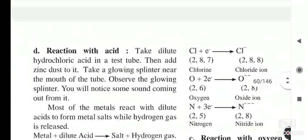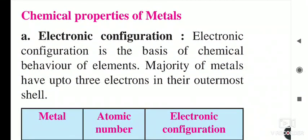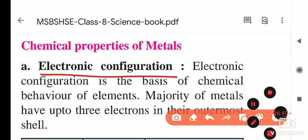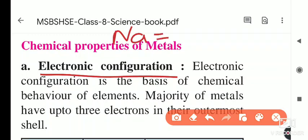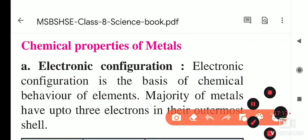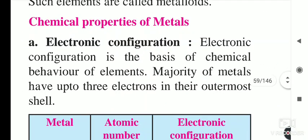Next we will see the chemical properties of metals. The first chemical property is electronic configuration. For example, sodium is a metal with atomic number 11. Its electronic configuration is 2, 8, 1 — two electrons in the first orbit, eight in the second, and one in the outermost orbit.